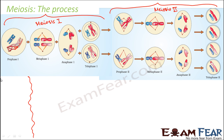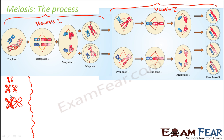What happens during prophase 1? Initially the homologous chromosomes look like this — these two are homologous chromosomes. The homologous chromosome replicates and then duplicates to form sister chromatids, so now you have duplicated homologous chromosomes. In prophase 1 it is also seen that the homologous chromosomes start to pair up.